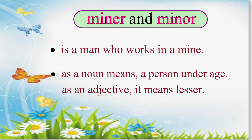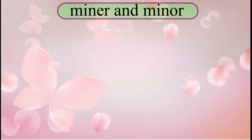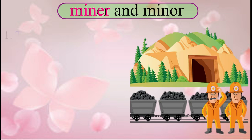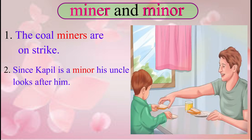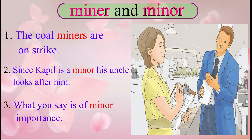Now let us have a look at the sentences so that we may understand them better. The sentence for miner (M-I-N-E-R) is: the coal miners are on strike. For minor (M-I-N-O-R): since Kapil is a minor, his uncle looks after him. And when we use minor as an adjective: what you say is of minor importance.